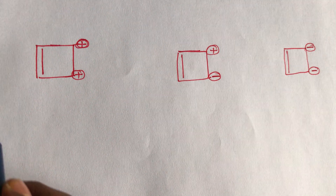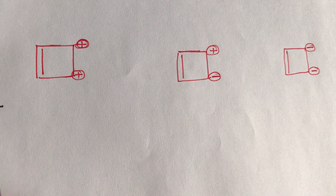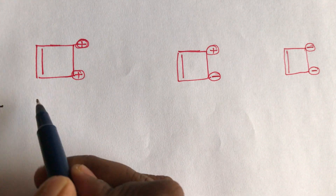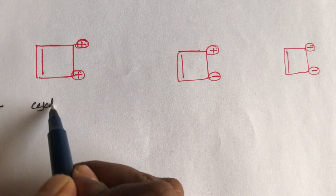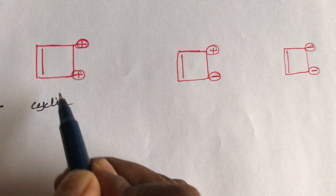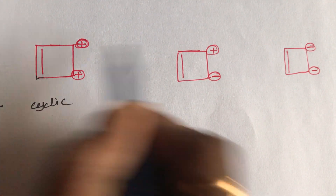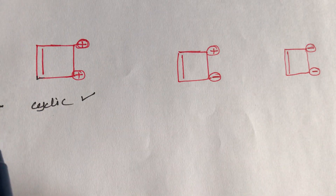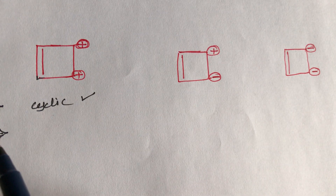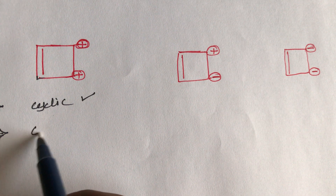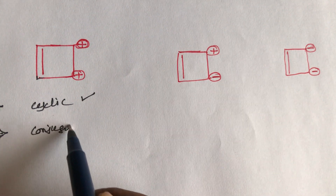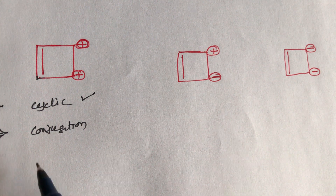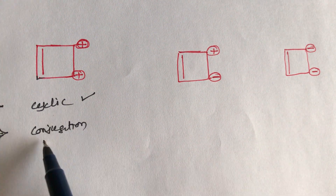How do we identify? We already know the conditions. First condition: the compound must be cyclic. The given structure is already cyclic — it is a ring structure — so the first condition is satisfied. The second condition: conjugation must be present.